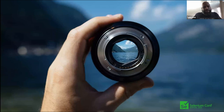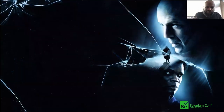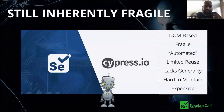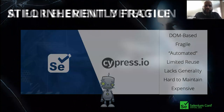Selenium also uncovered challenges inherent in UI automation. Anything based on the DOM is going to be inherently fragile — we're still lacking when it comes to what we call automation: limited reuse, no reuse across applications, little generality, and hard maintenance if you don't follow good practices. That gets us to the question of where the future of this is heading.